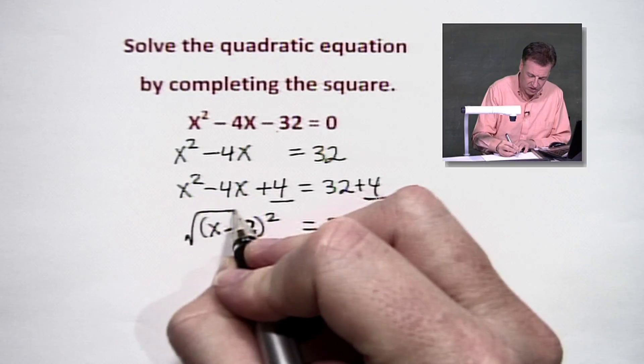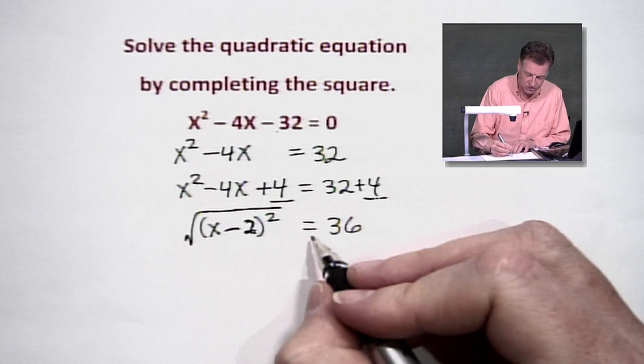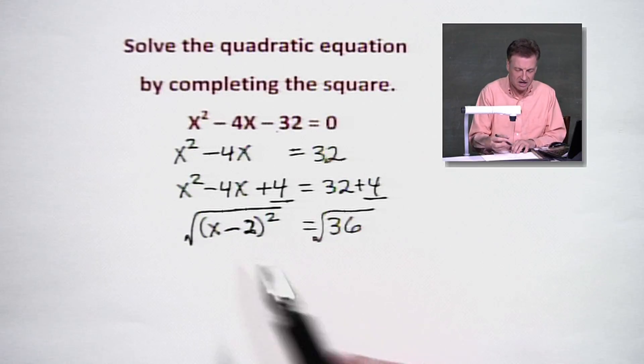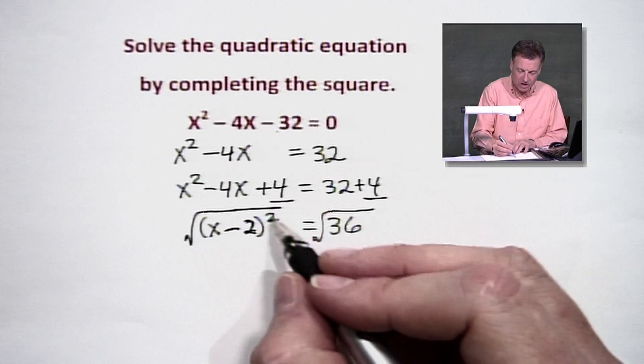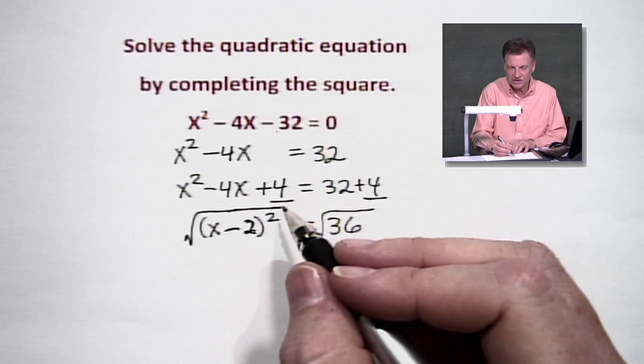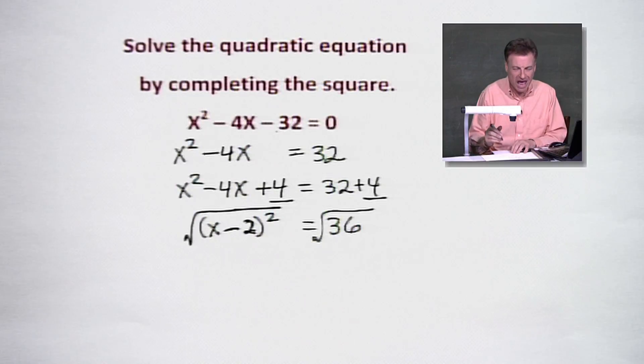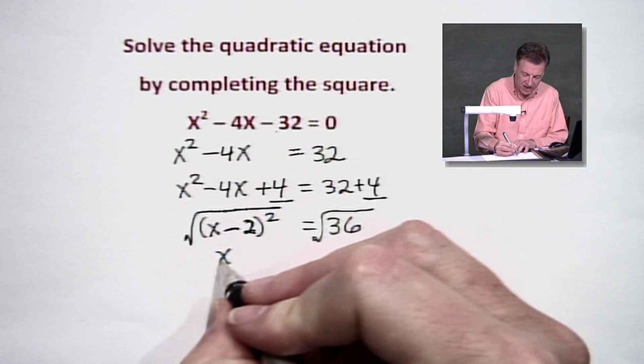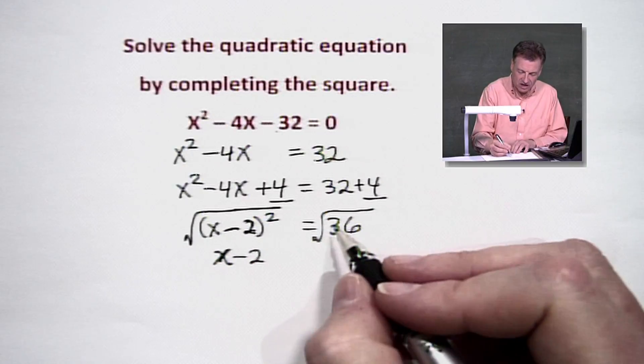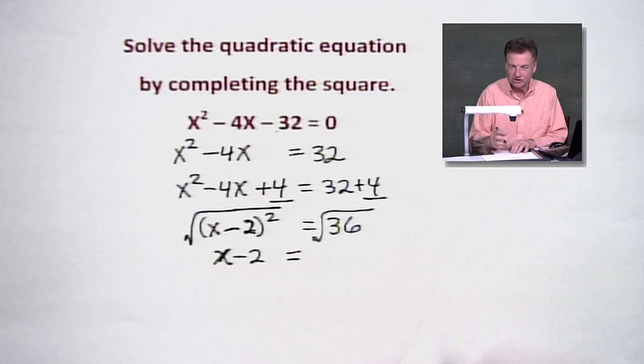We're going to square root both sides because we're after x by itself. So basically, this little squaring process outside the parentheses is going to mix and mingle with that square root and basically cancel each other out. So we're left with x minus 2 because they're inverse functions of each other.